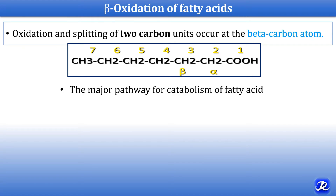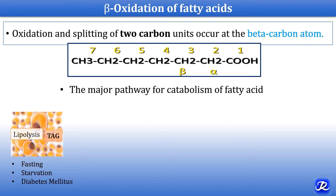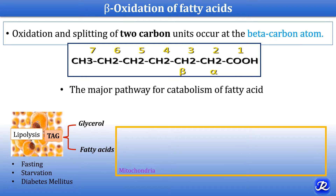When does it occur? In conditions of fasting, starvation, and diabetes mellitus, there is lipolysis in the adipose tissue — that is, TAG is broken down into fatty acids and glycerol. Fatty acids are transported to the peripheral tissue, where they are activated and through the carnitine shuttle they enter the mitochondria. So beta oxidation occurs in the mitochondria; it is the mitochondrial pathway.